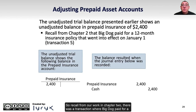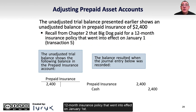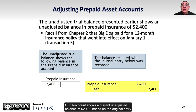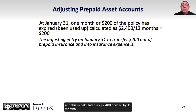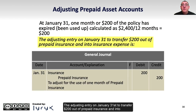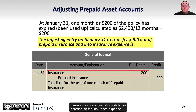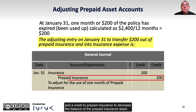Recall from Chapter 2 that Big Dog paid for a 12-month insurance policy that went into effect on January 1st. The T-account shows an unadjusted balance of $2,400 based on the original entry: a debit to prepaid insurance and a credit to cash. At January 31st, one month or $200 of the policy has expired, calculated as $2,400 divided by 12 months. The adjusting entry on January 31st transfers $200 out of prepaid insurance into insurance expense, with a debit to insurance expense and a credit to prepaid insurance.